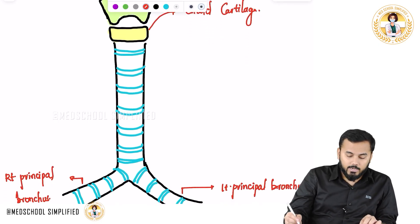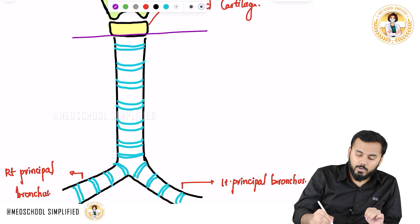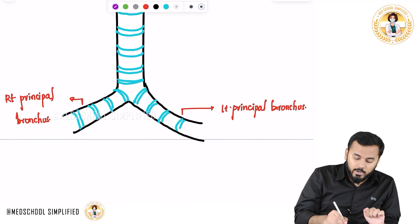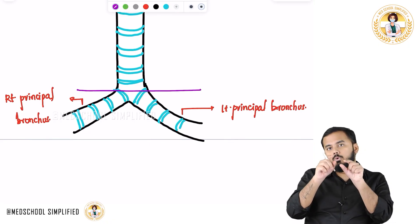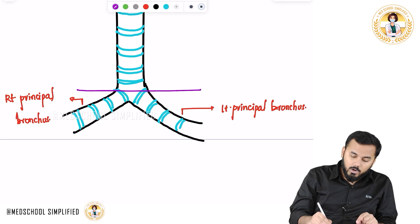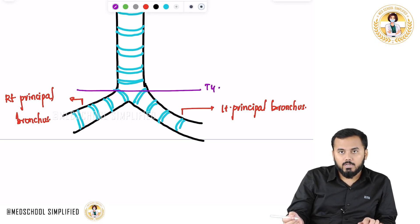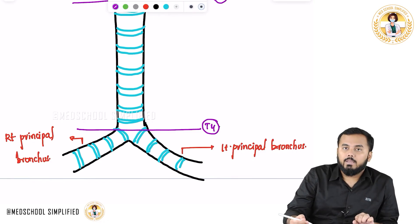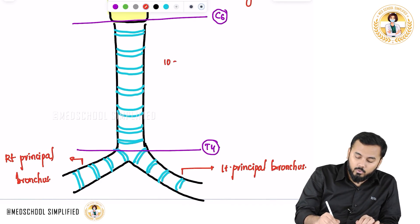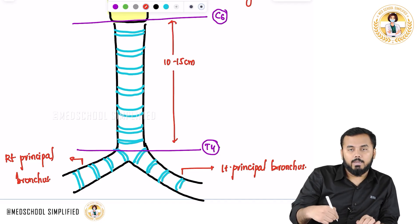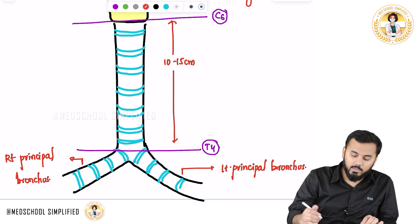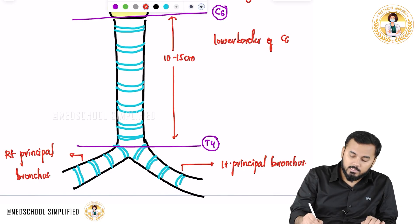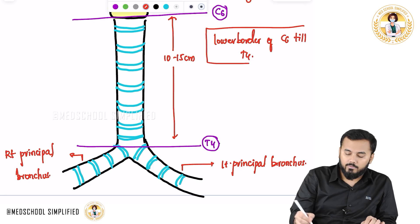Where is the cricoid cartilage located? The lower end of the cricoid cartilage is located at the level of C6. Your trachea also starts from the lower end of the cricoid. The bifurcation into the right and left principal bronchi is at the lower end of T4. So the trachea extends from C6 all the way to T4, and its length is about 10 to 15 centimeters.